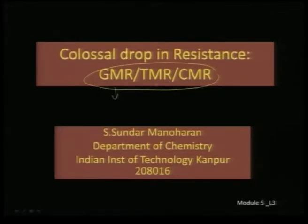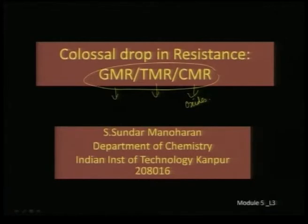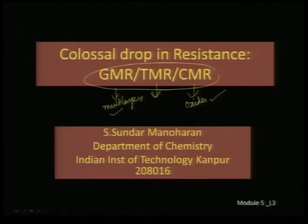GMR and TMR predominantly involve metallic ferromagnetic layers, whereas CMR is confined more to oxides. We looked at the example of CMR, we looked at multilayers of GMR, and we looked a little bit into the mechanism of TMR which brings about a colossal change in resistance.